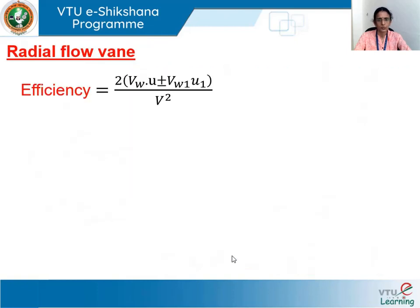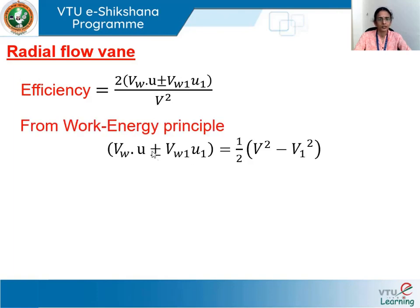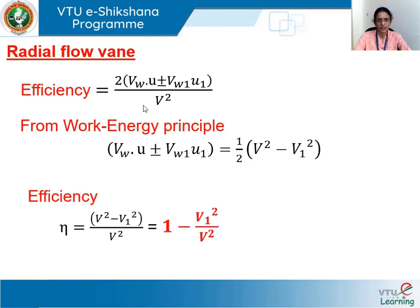Substituting this result into the efficiency expression — where we had Vw·U ± Vw1·U1 — and replacing it with ½(V² − V1²), then simplifying, the expression for efficiency becomes: η = 1 − V1²/V², where V1 is the absolute velocity of the jet at the outlet and V is the absolute velocity at the inlet. This is a very simplified form.